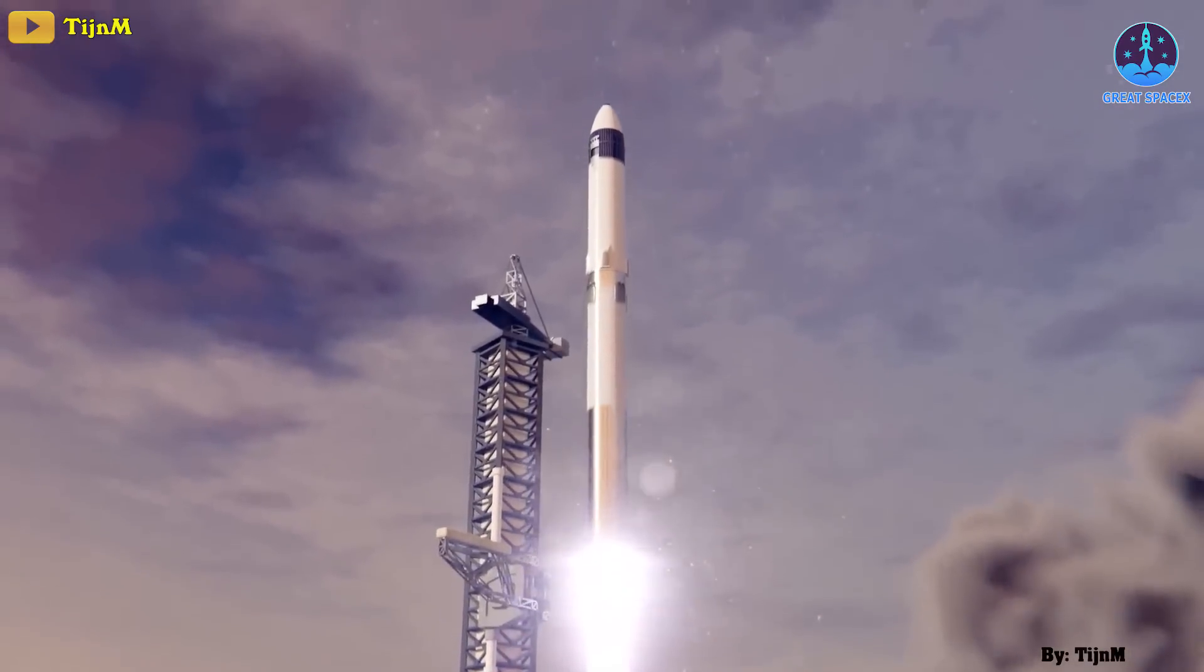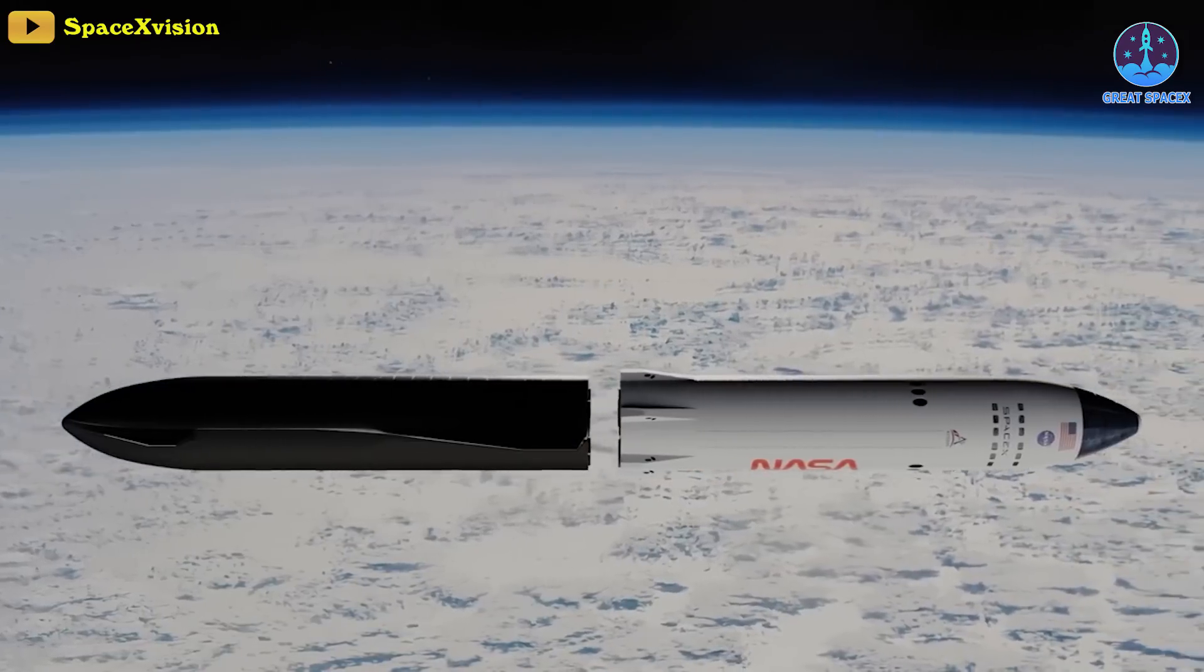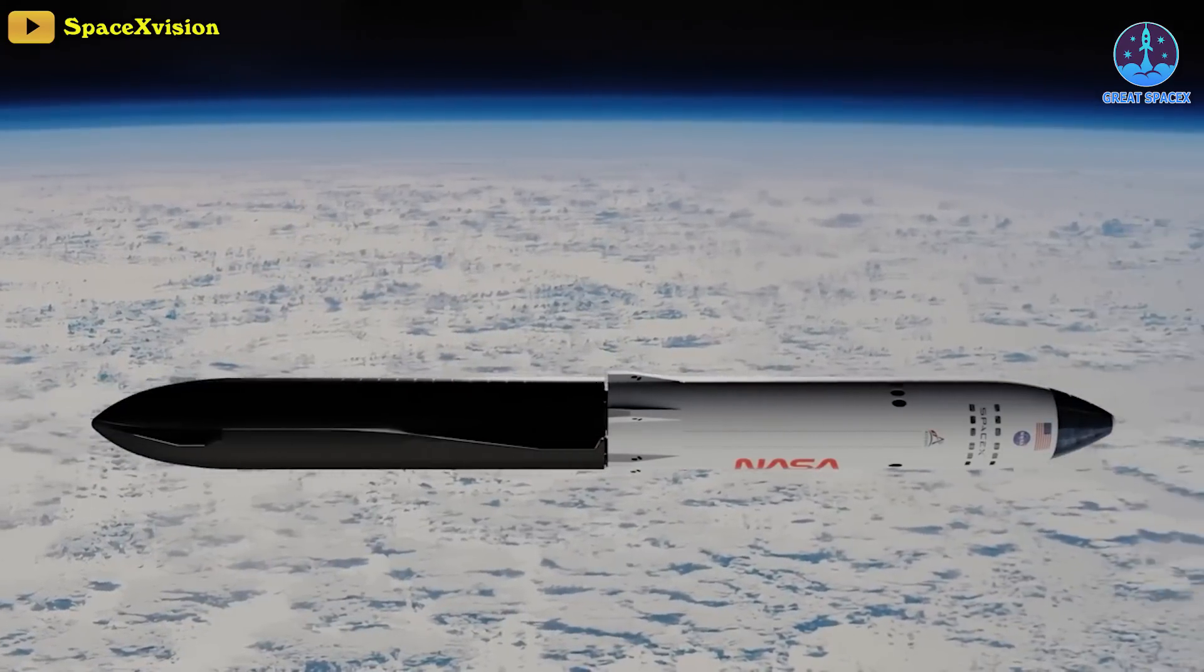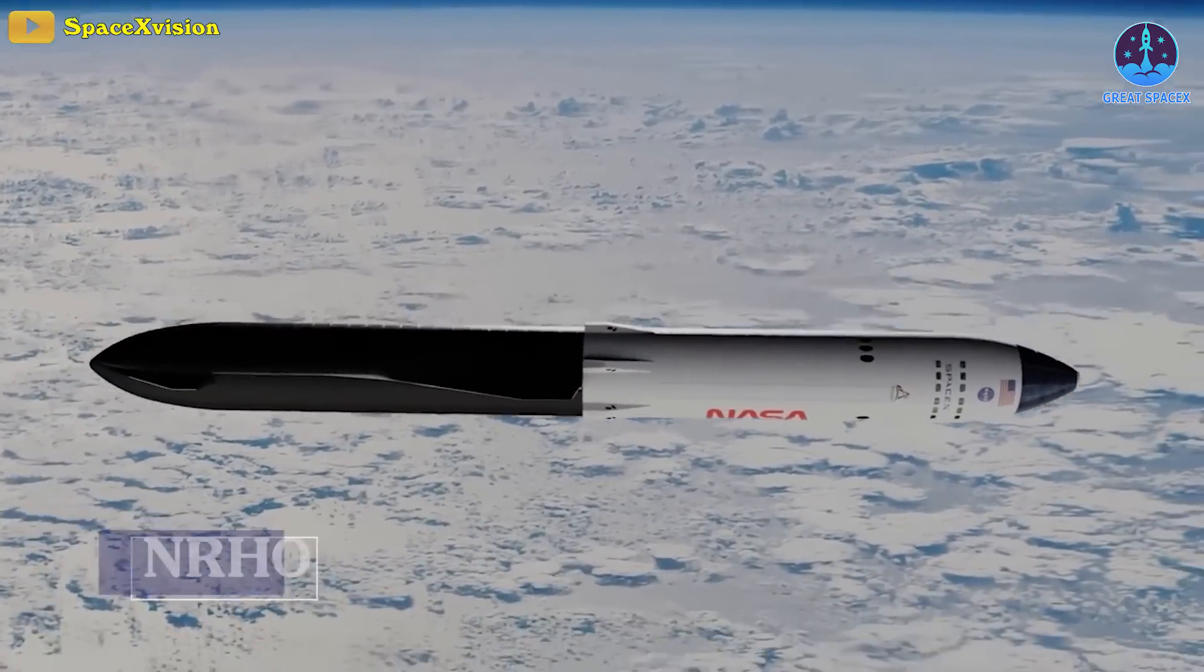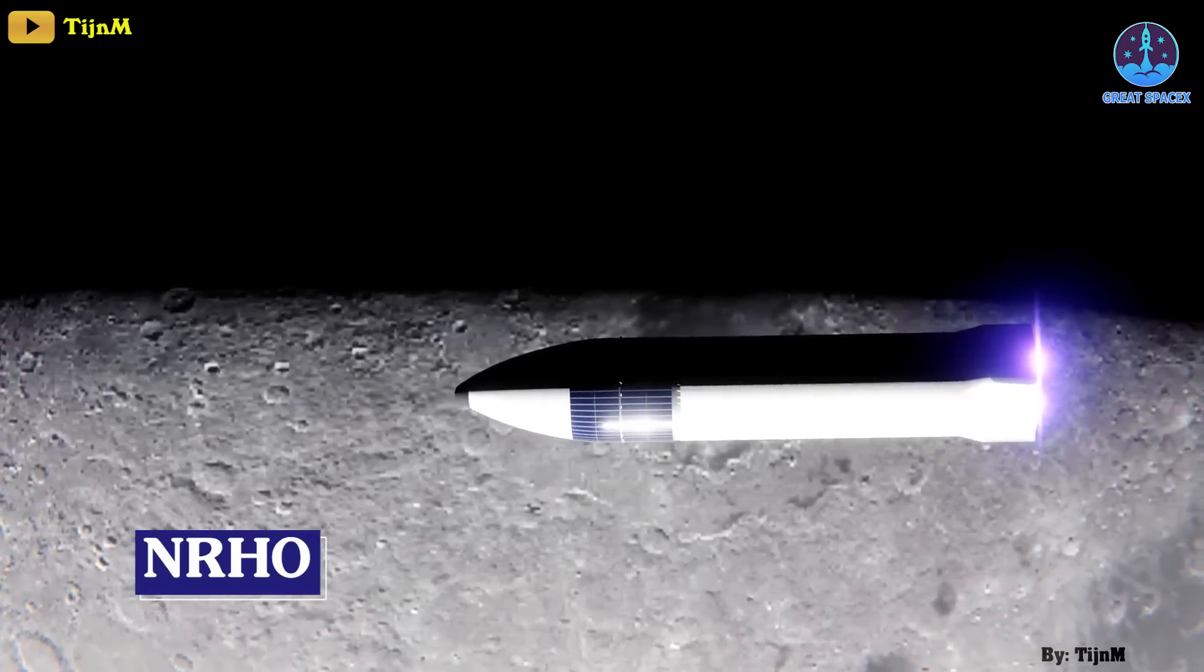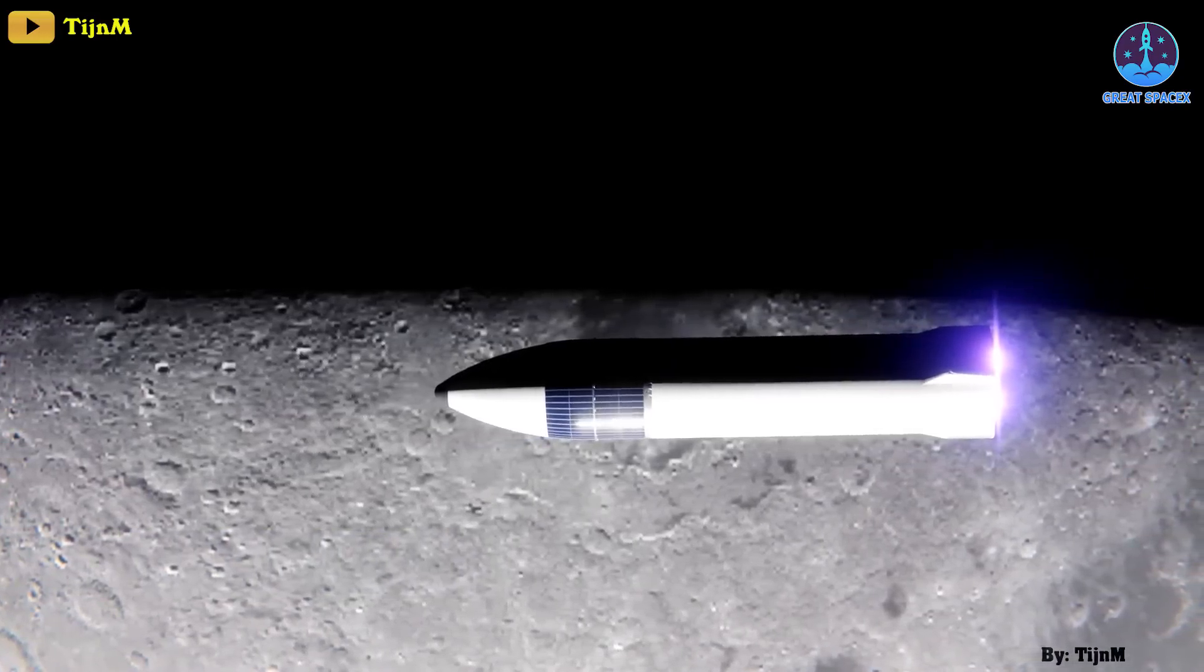Once the depot is filled, the lunar starship variant will lift off, fuel up from the depot, and then start its journey to the near rectilinear Halo orbit, or NRHO, after performing a translunar injection.